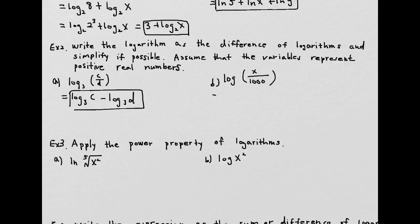Let's try the next one — another division, so we can change to subtraction. We don't have a written small base, meaning this is log base 10. If we rewrite 1000 with base 10, it's 10 to the third exponent, which is 1000. So this simplifies to 3.